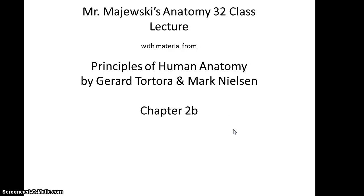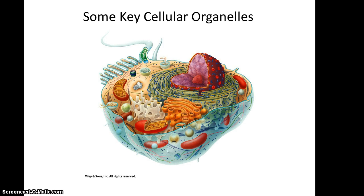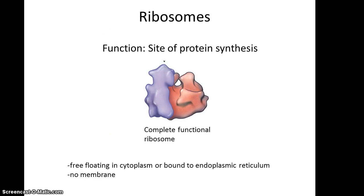Mr. Majewski's Anatomy 32 class, Chapter 2, Lecture Part B. Now we're going to move on to some other key organelles found in the cytoplasm. The first we'll talk about is the ribosomes. Ribosomes are a two-part protein structure with a small subunit and a large subunit. They are found free-floating in the cytoplasm or bound to the endoplasmic reticulum. Ribosomes do not have any sort of membrane structures associated with them. The function of the ribosomes is the site of protein synthesis, which are key to most functions of the cell.